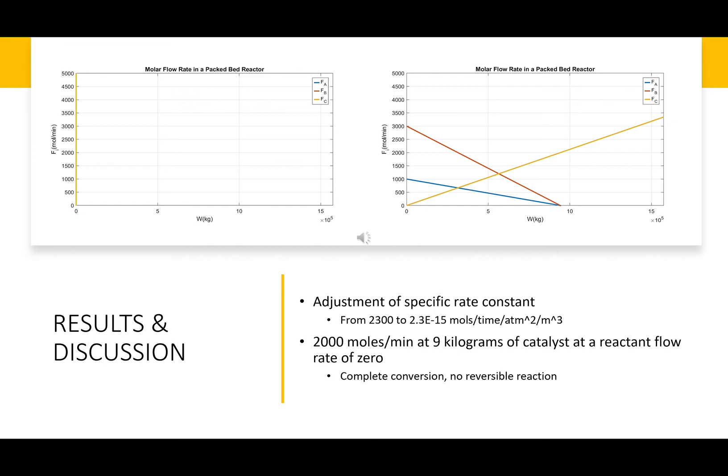When we initially programmed our MATLAB code and ran it with the K value, specific rate constant value found from literature of 2300 moles per time, atmosphere squared, meter cubed, we got this graph on the top left, which shows not a realistic representation of what this process would look like. Through troubleshooting our code and changing different variables, we were able to pinpoint that this unrealistic result came from the large specific rate constant. This could be because the experimental data we base it off of could not be compatible with the way we modeled our system in MATLAB due to the simplifications we made.